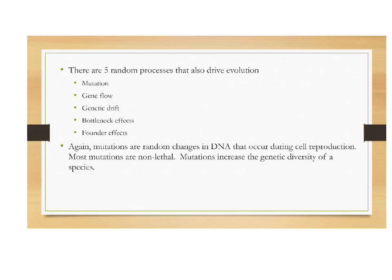The third type of process driving evolution involves random processes: mutations, gene flow, genetic drift, the bottleneck effect, and the founder effect. Mutations are random changes in DNA that occur during cell reproduction. Most mutations are non-lethal — in fact, most are silent, meaning they don't produce a phenotypic change — but mutations do increase the genetic diversity of a species.